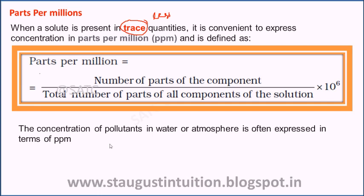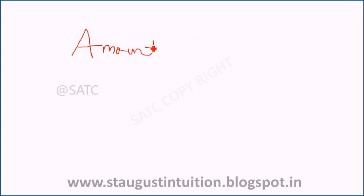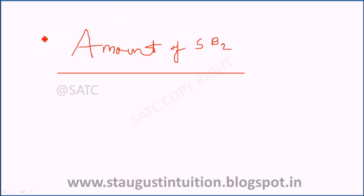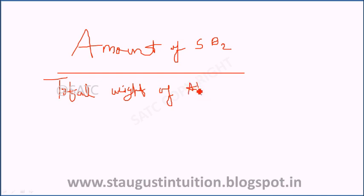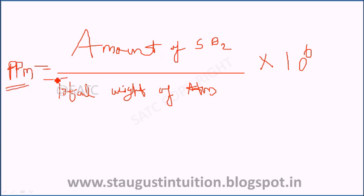For example, suppose we have sulfur dioxide (SO₂) in the atmosphere. The ppm of SO₂ is calculated as: the amount of SO₂ divided by the total weight of the atmosphere, multiplied by 10 raised to the power 6. This is parts per million. If you want to know the concentration of sulfur dioxide in the atmosphere, use this formula.